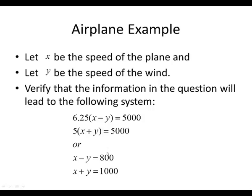And we can quickly simplify both equations to arrive at the system x minus y equals 800, and x plus y equals 1,000. This is actually a system of linear equations. It has two equations and two unknowns.